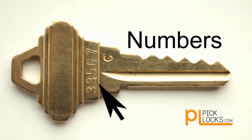The numbers on the bow of the key correspond to the bitting cuts, ensuring they match the length of the bottom pins.